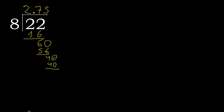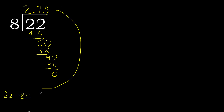40 is not greater. 40 minus 40 is 0. Therefore finish — 22 divided by 8 is 2.75.